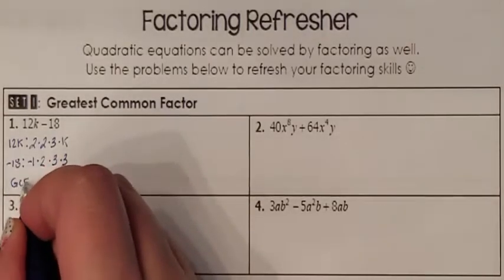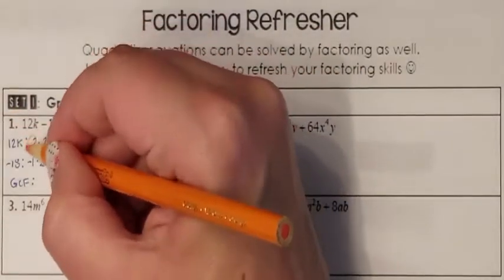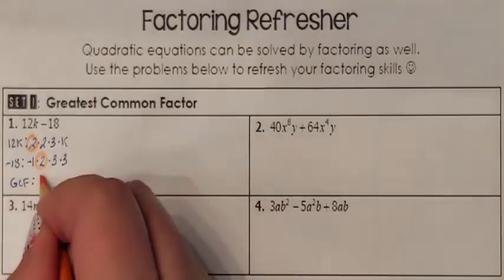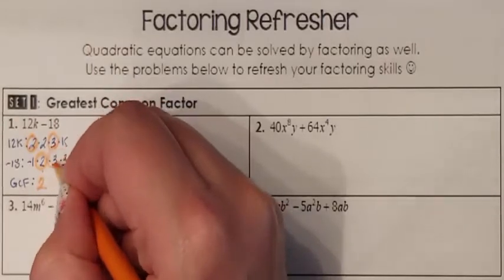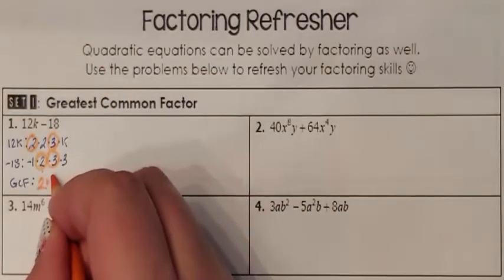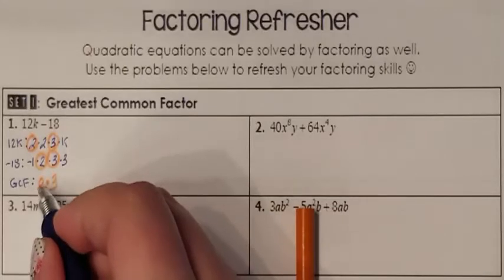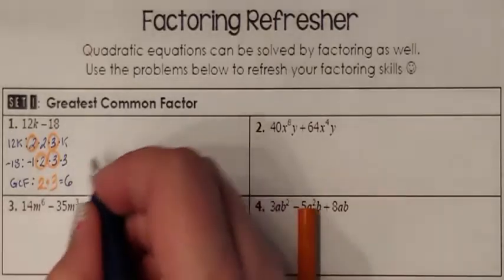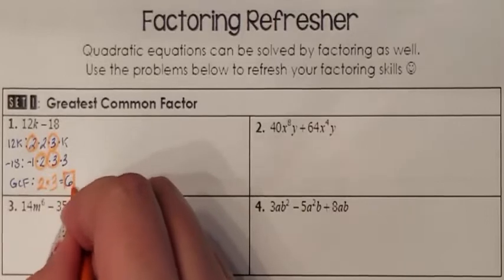To find the GCF, it's what the two terms have in common. This list has a 2 and this list has a 2, so I'm going to say they have a 2 in common. I also see a 3 in each list, so there's a 3 in common as well. I see nothing else in common. So they had a 2 and a 3 in common, which means I had a 6 in common. So my GCF is 6.